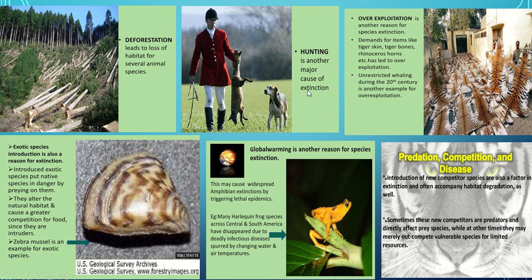Deforestation leads to loss of habitat for several animal species. Hunting is another major cause of extinction, along with over-exploitation for items like tiger skin, tiger bones, or rhinoceros horns. Introduction of exotic species into native habitats also drives native species to extinction. Global warming affects organisms and can lead to the extinction of certain species. Finally, disease or epidemics can also cause the extinction of an entire species.